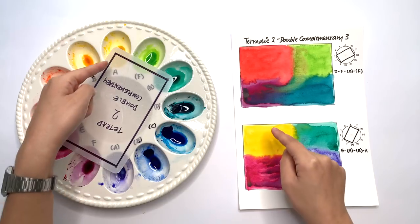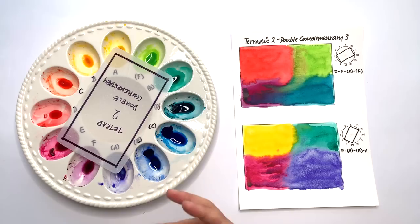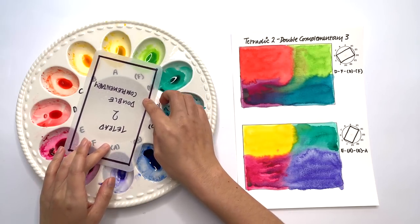As well as the A pairs and that's the last of the double complementary color scheme because once you move across again you're back to having these four as your colors.